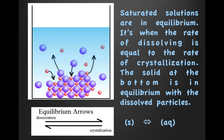Saturated solutions are also in equilibrium. It's when the rate of dissolving is equal to the rate of crystallization. The solid at the bottom is in equilibrium with the dissolved particles. In the forward direction, you have dissociation — the dissolving of an ionic substance. The reverse reaction would be the crystallization of those ions to reform the solid. When dissolving and recrystallizing are at equilibrium, their rates are the same, and there's no net change in concentration or other observable properties.